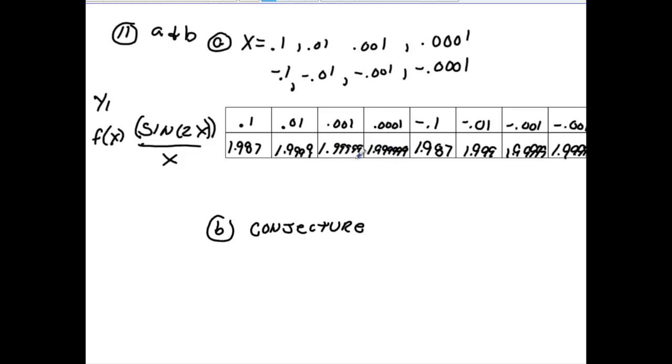You can tell right now that as I go to the right side, I'm getting closer and closer to 2. As I go this way from the left side, I'm getting closer and closer to 2, so the value would be, the conjecture would be 2. That would be the limit of this function as x is approaching 0.